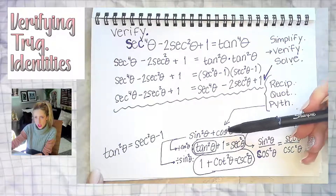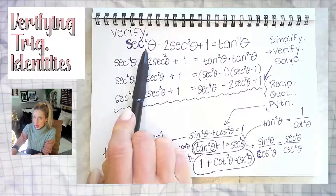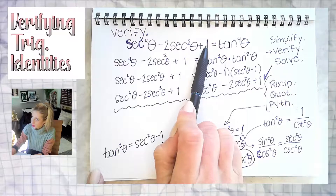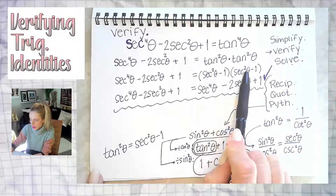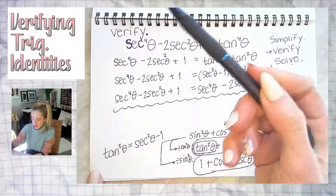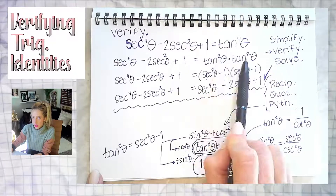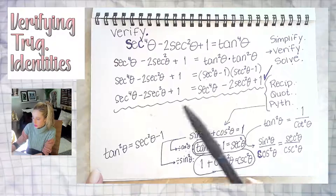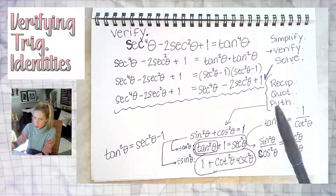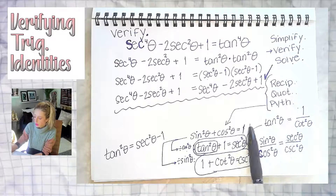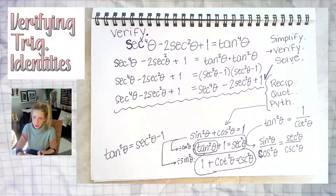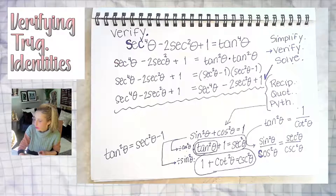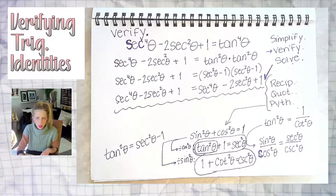We verified it by showing all our work — that's the whole point when verifying a trig identity. These two expressions are totally equivalent. If you wanted to work the left side instead, you could factor sec⁴θ − 2sec²θ + 1, get (sec²θ − 1)², then use the Pythagorean identity in reverse to replace (sec²θ − 1) with tan²θ, and multiply out. Either approach works — it's up to you which is easier.